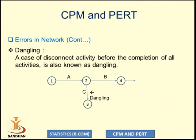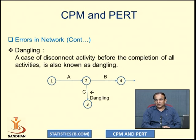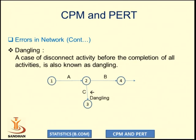The second error is called dangling. Dangling means a case of a disconnected activity before the completion of all the activities of the project. When all activities are completed but a particular activity is not connected, it is called dangling. To fix dangling, we use a dummy activity to join that disconnected activity to the completion event, thereby removing the error.